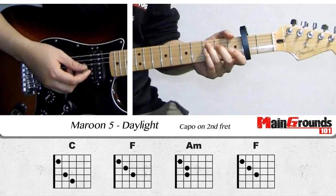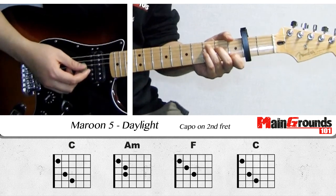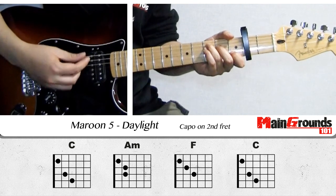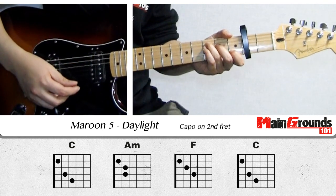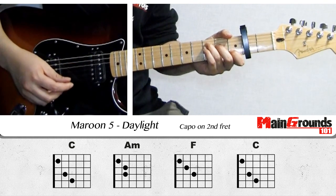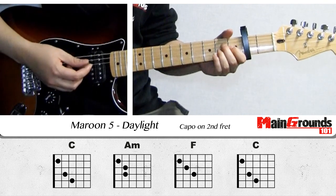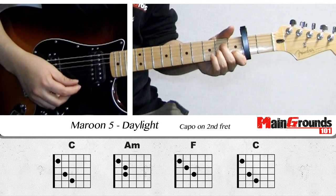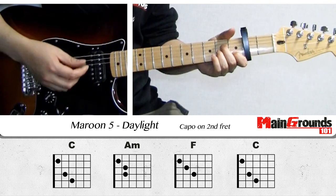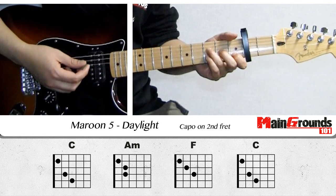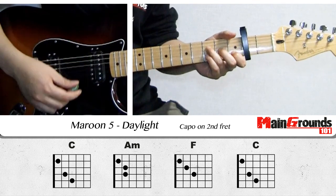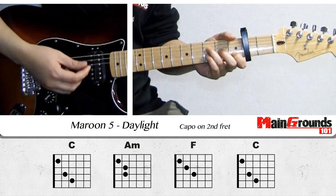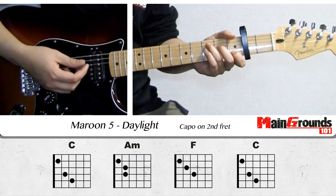Then we go to the chorus. That one starts with the C again, then an A minor, then an F, and it ends with the C again.